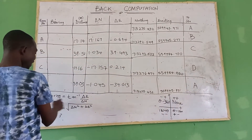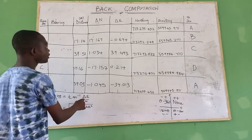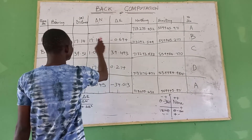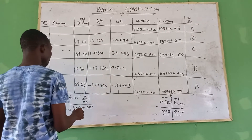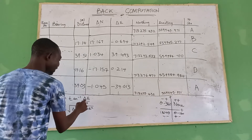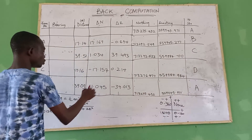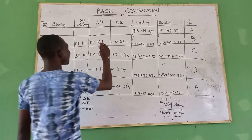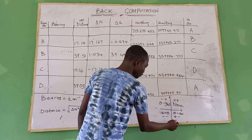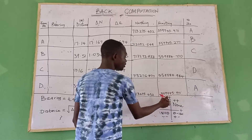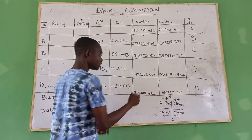Using the formula arctan inverse of delta easting divided by delta northing, you solve for the value before minding your sign. So you compute delta easting divided by delta northing, then apply arctan to get a value. Here we have minus and plus, so that value we subtract from 360, which gives us our bearing.